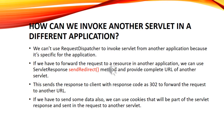How can we invoke another servlet in a different application? We cannot use RequestDispatcher to invoke a servlet from another application because it is specific to the application. If we have to forward the request to a resource in another application, we can use the HttpServletResponse sendRedirect() method and provide the complete URL of the other servlet. This sends a response to the client with response code 302. If we also need to send data, we can use cookies that will be part of the servlet response and sent in the request to the other servlet.